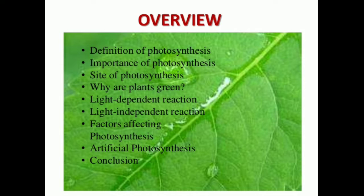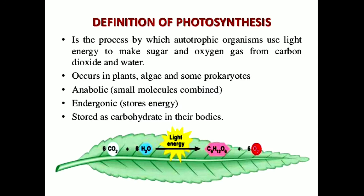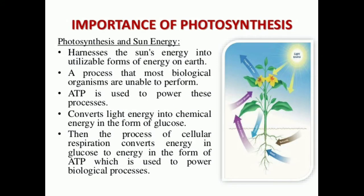Dear students, photosynthesis is the process of using light energy to convert water and carbon dioxide into sugar and oxygen. This occurs in all autotrophs. Autotrophs are organisms that have the ability to synthesize food by the process of photosynthesis. In other words, it occurs in plants, algae, and some prokaryotes.